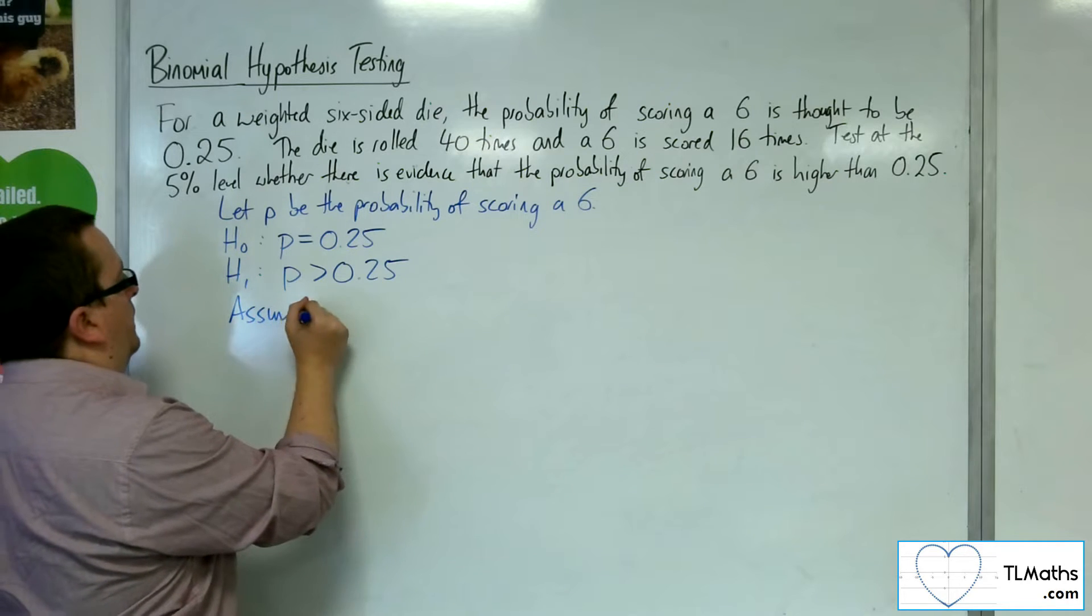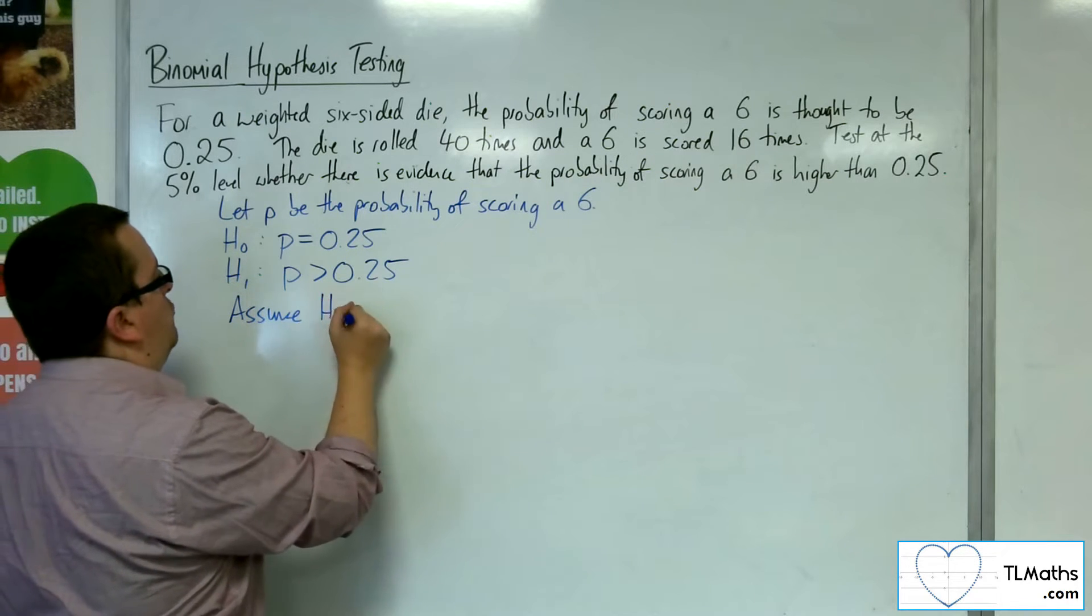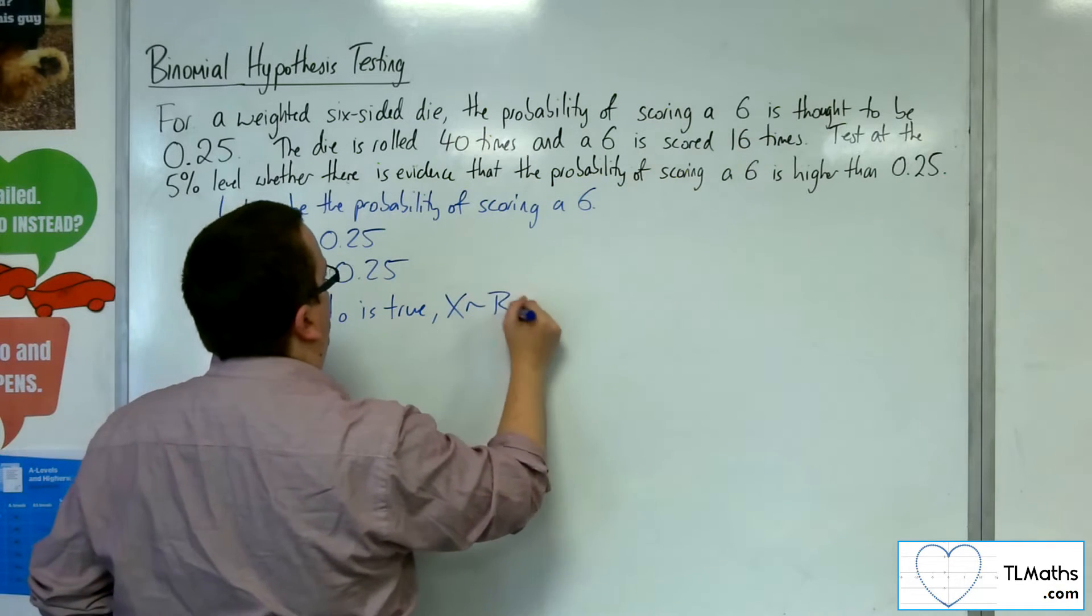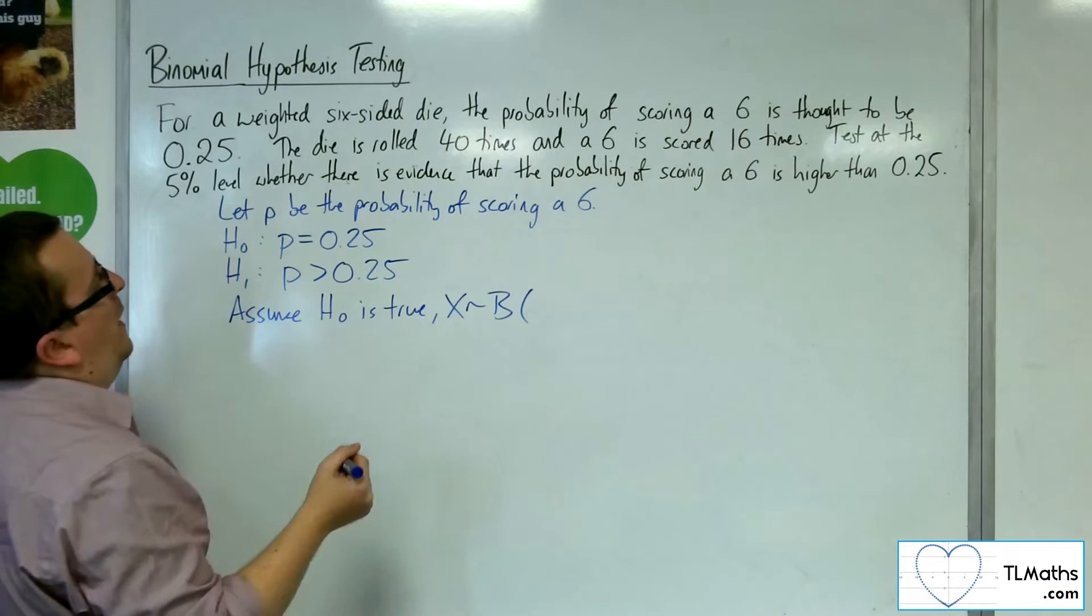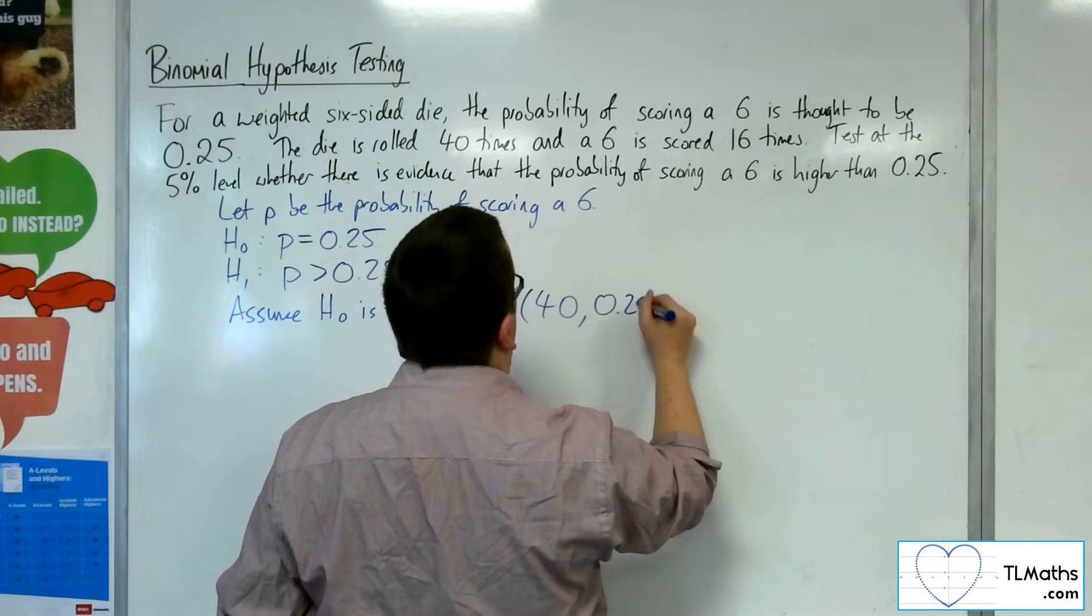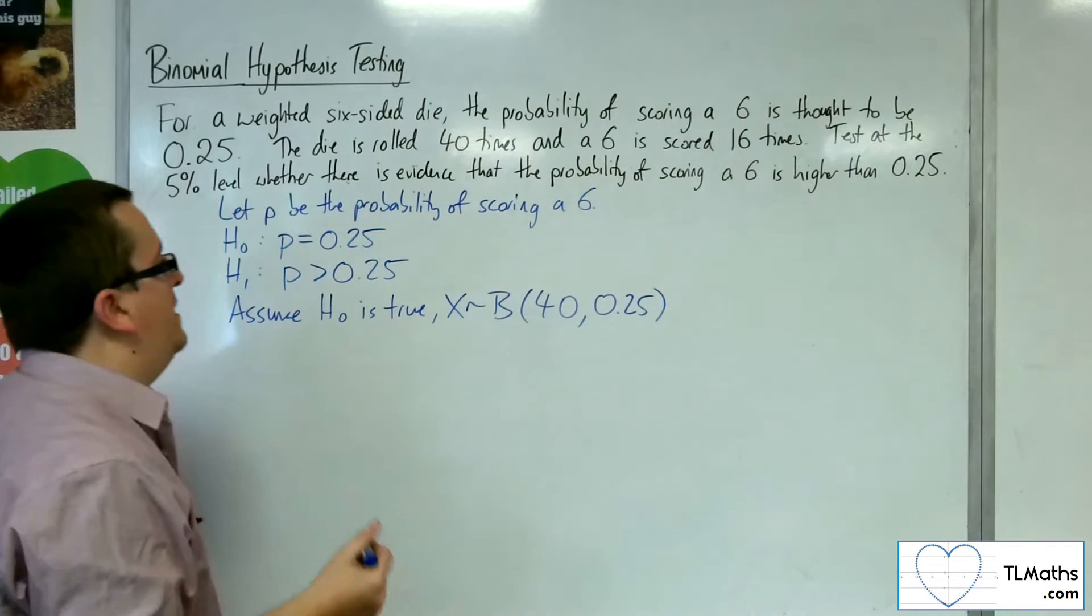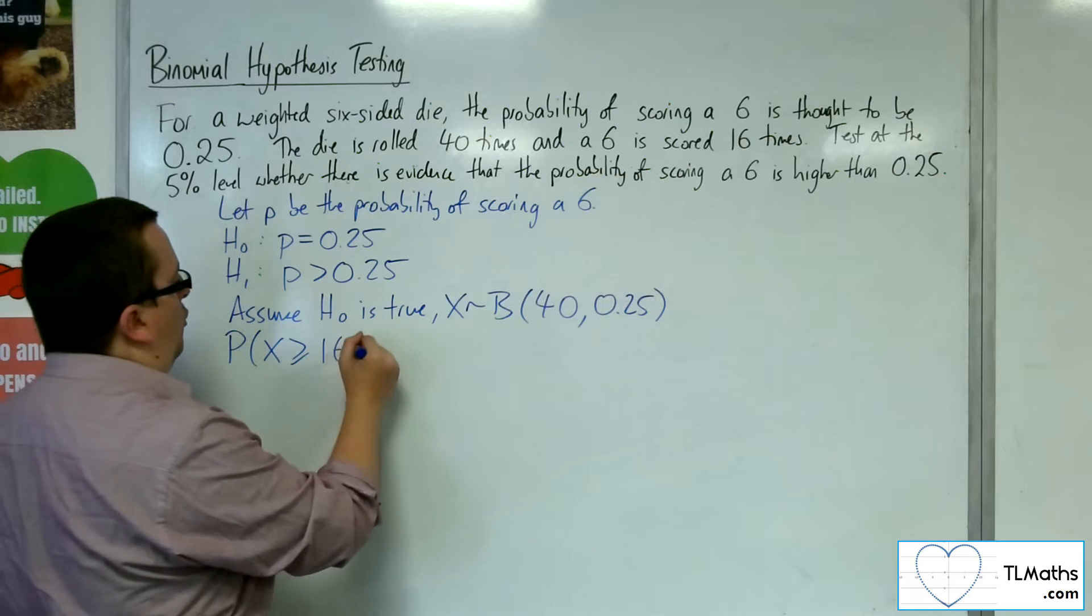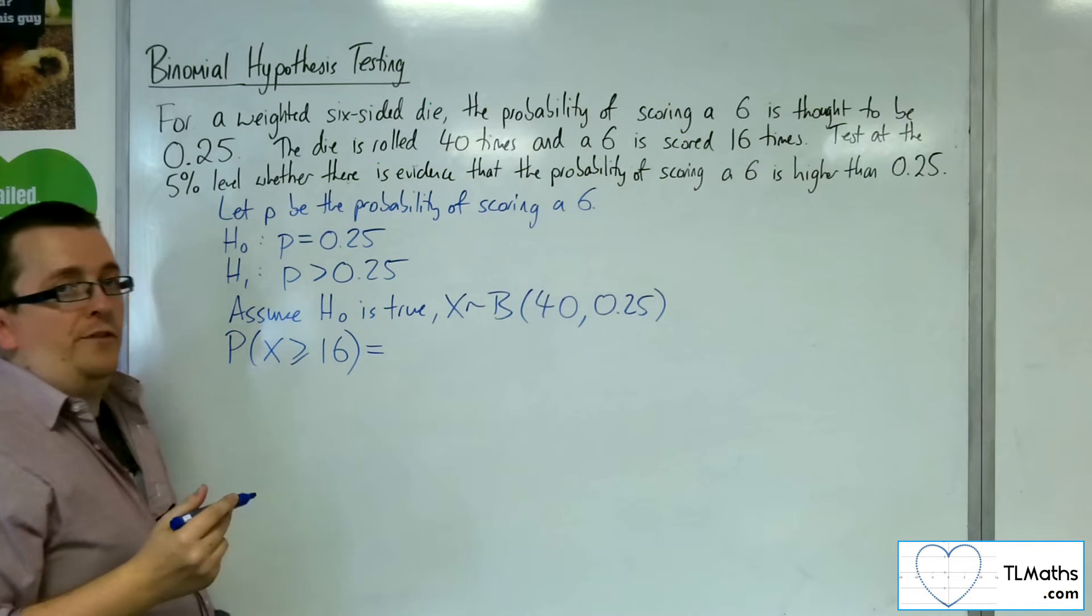Assuming H0 is true, we set up a binomial distribution where n is 40, the number of trials. The probability is 0.25. And we're trying to determine whether the probability of getting 16 or more is significant or not.